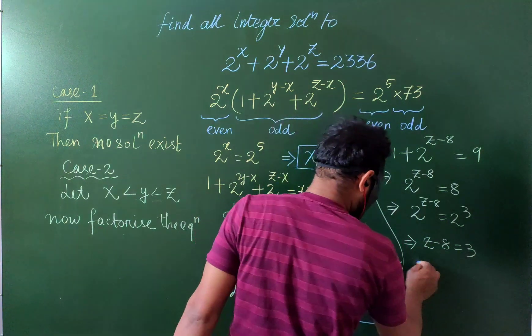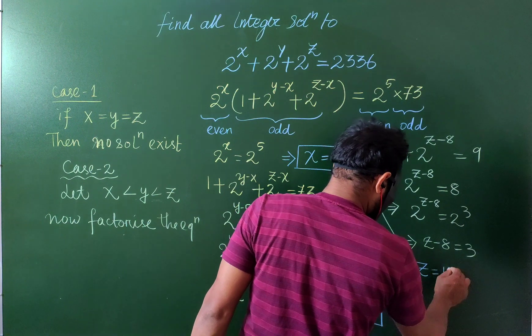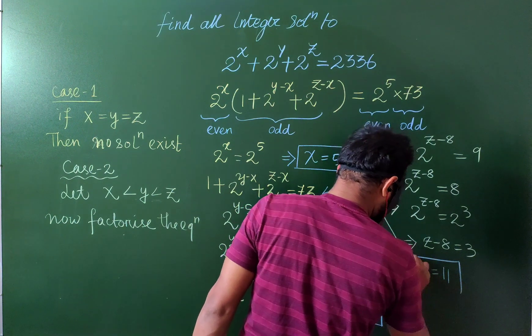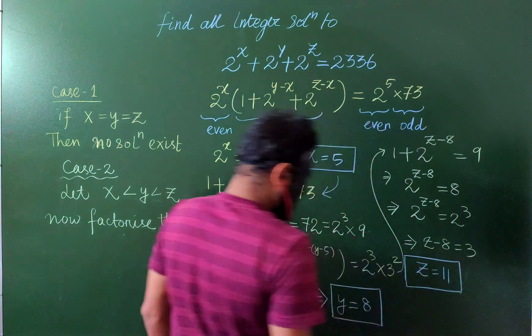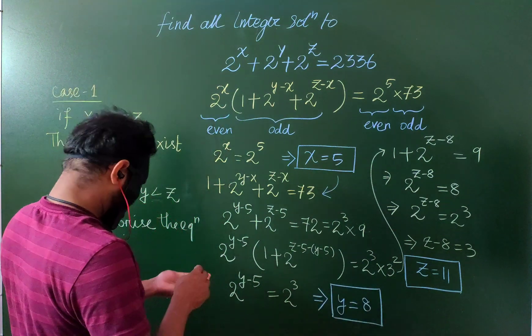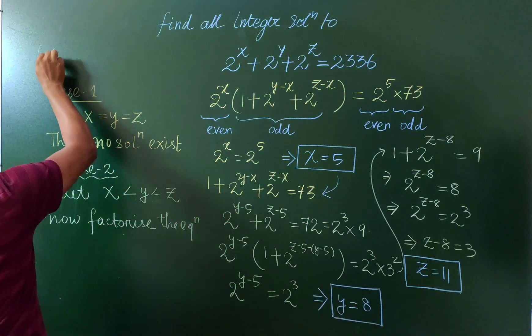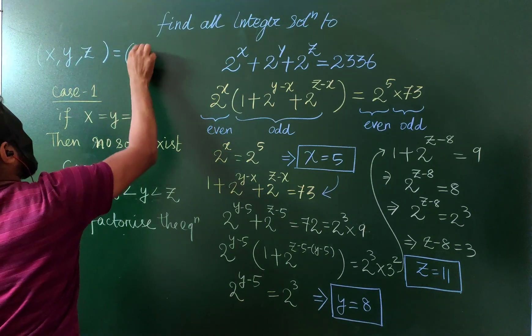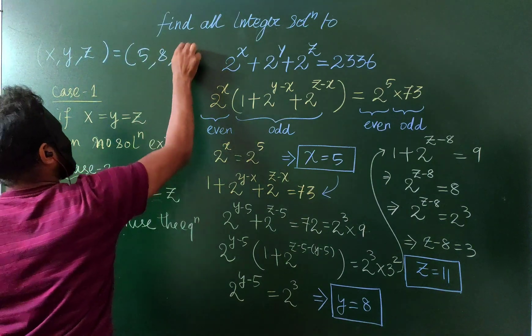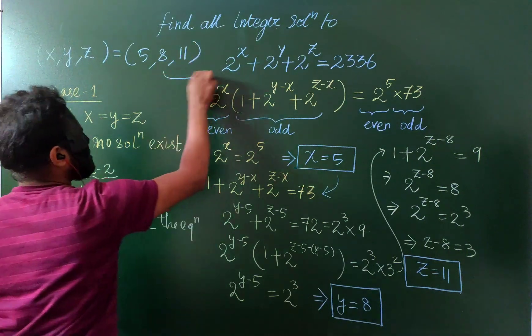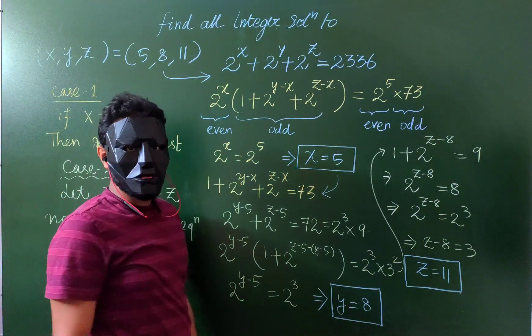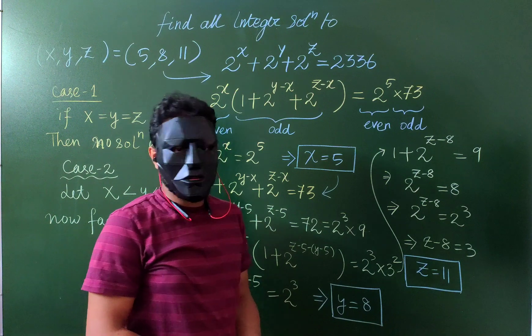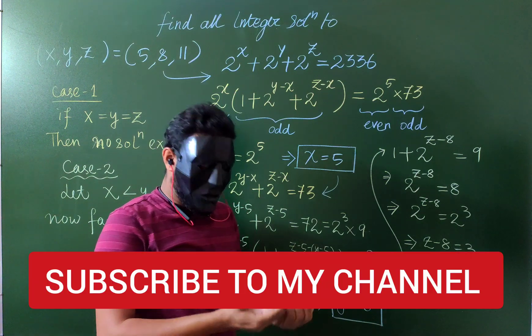So this is our final solution. The triplet (x, y, z) is (5, 8, 11). Hope you liked it, we will see you next time with one more question with a brilliant solution. Till then, have a nice day, bye bye.